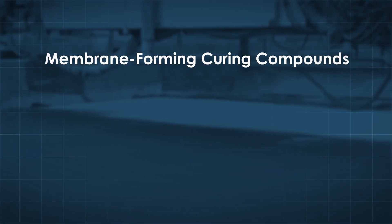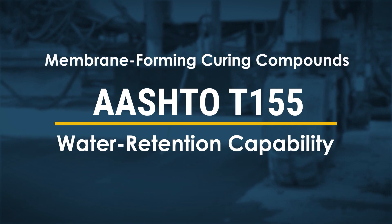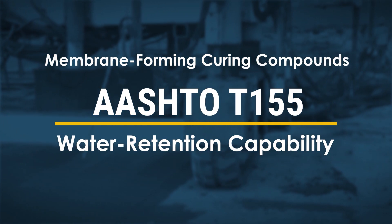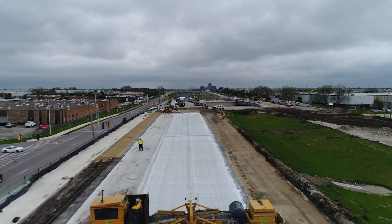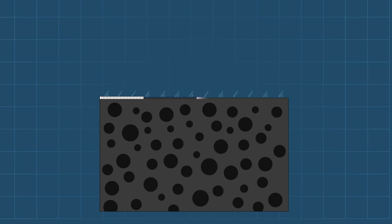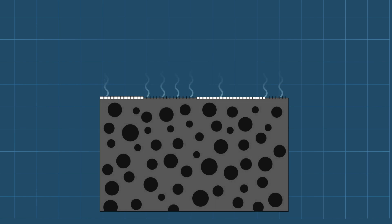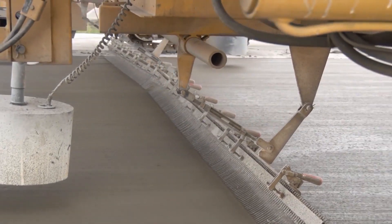Membrane-forming curing compounds must be applied to all exposed concrete surfaces to control moisture evaporation. They are specified under AASHTO M148 in terms of color and composition, whereas their water retention capability is assessed through AASHTO T155. For maximum effectiveness, they must be applied uniformly in sufficient quantity per the manufacturer's specifications and at the proper time. Poor coverage could result in unacceptable moisture loss, and any delay in application under adverse conditions could result in plastic shrinkage cracking. Deep texturing such as an aggressive broom finish or tining may require increased application rates.